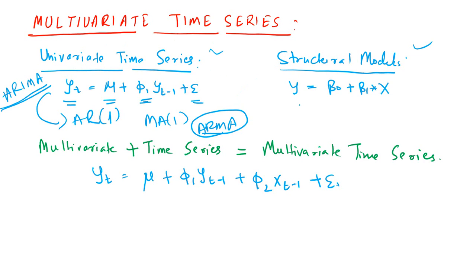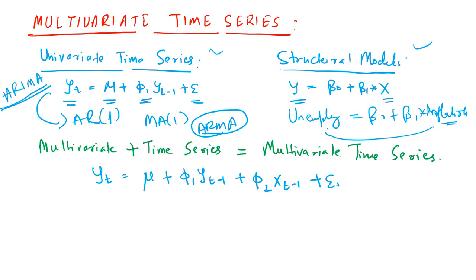So what are structural models? In structural models, we have a dependent variable and then we have independent variables. The dependent variable is most often different from the independent variable — they are totally different variables. One example could be finding out the unemployment rate, where unemployment rate is the dependent variable, and we are building a model to know how inflation in a particular country affects the unemployment rate. This is a typical structural model — a simple linear regression model.